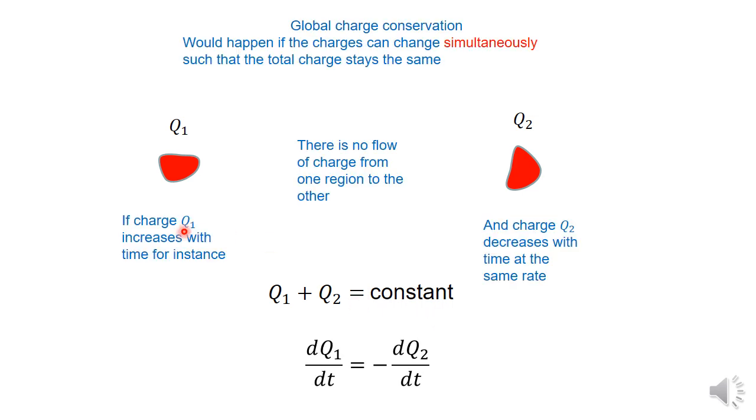That means if, for instance, somehow you can increase the charge Q1, and exactly at the same time, the charge Q2 decreases with time, and this happens without any flow of charges from one region to the other. If the charge here is increasing, it's not because the charge Q2 is passing towards this region. It's just somehow, imagine there's some mechanism that can make the charge be created here, so it increases here, and here at the same time it decreases, without any flow of charge from one region to the other.